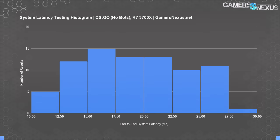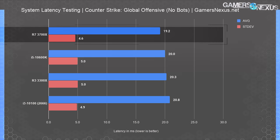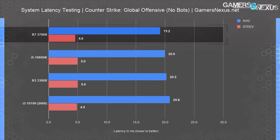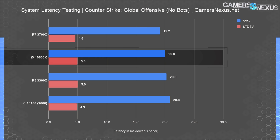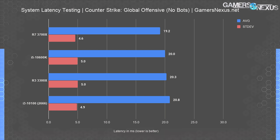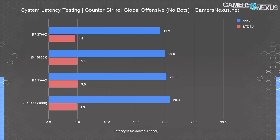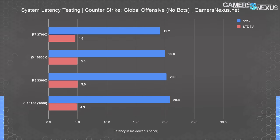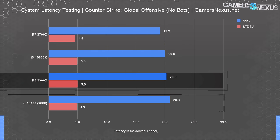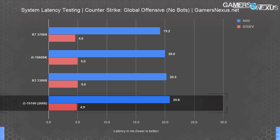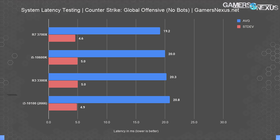Without bots, average latency on the 3700X system was 19.16ms with a standard deviation of 4.6, while Intel's 10600K was 19.99ms average with a slightly higher deviation at 4.97. Keep in mind when we say latency, it means total system latency, not any one aspect of the chain. This is all well within error. The lower end CPUs were fairly close to their more expensive counterparts — the 3300X averaged 20.3ms and the 10100 averaged 20.8ms. There's almost no meaningful difference between any of these, even with the lower frequency RAM on the 10100.